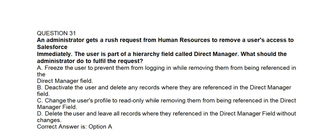Option A: freeze the user to prevent them from logging in without removing them from being referenced in the Direct Manager field. Option B: deactivate the user and delete any records where they are referenced in the Direct Manager field. Option C: change the user's profile to read only while removing them from being referenced in the Direct Manager field. Option D: delete the user and leave all records where they are referenced in the Direct Manager field without changes.